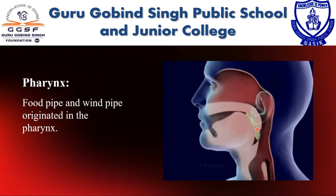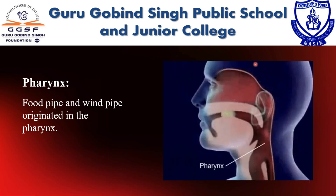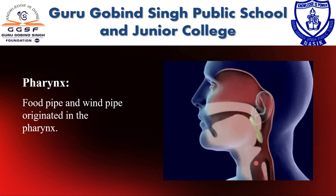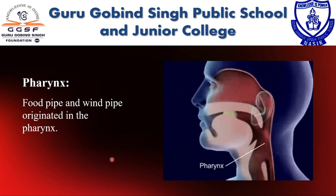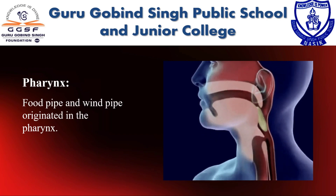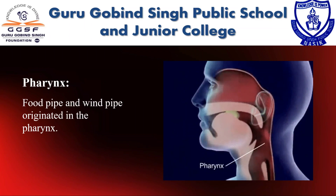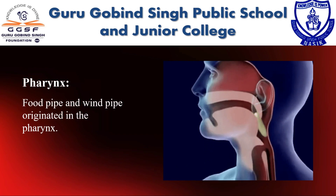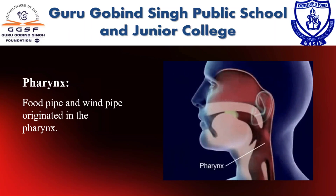The next part is the pharynx. The food pipe and windpipe both originate in the pharynx. The windpipe is present in front of the food pipe. There is a lid at the beginning of the windpipe — when food particles pass through the food pipe, this lid closes the windpipe to avoid entry of food particles into it. Otherwise the windpipe remains open and air passes through the pharynx into the windpipe.